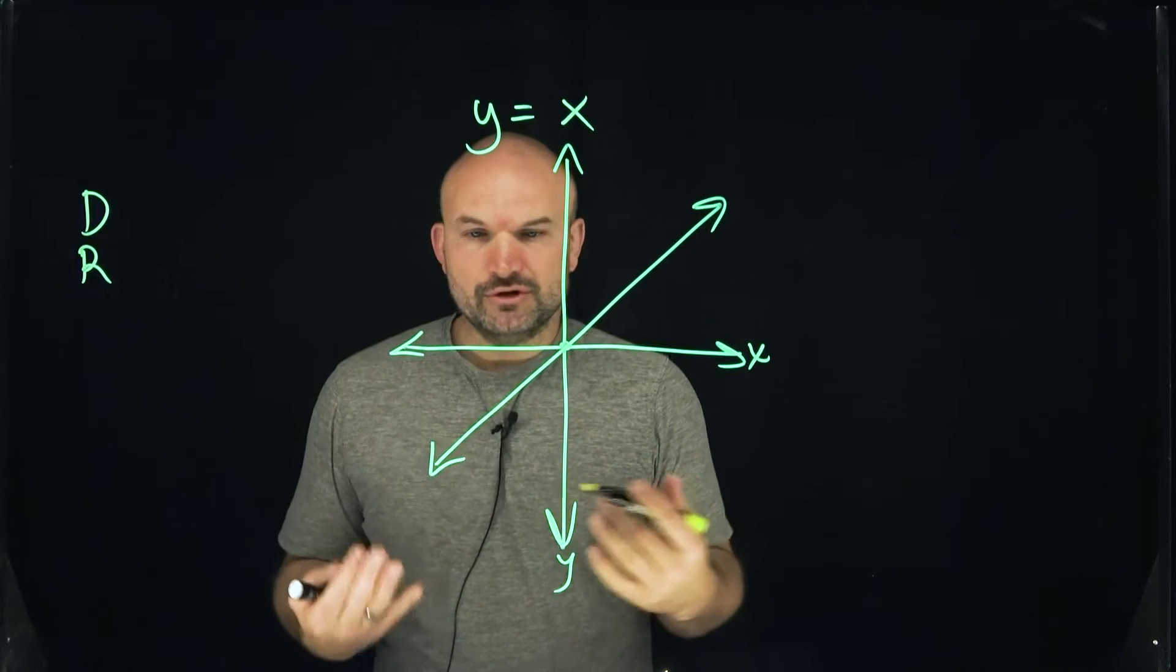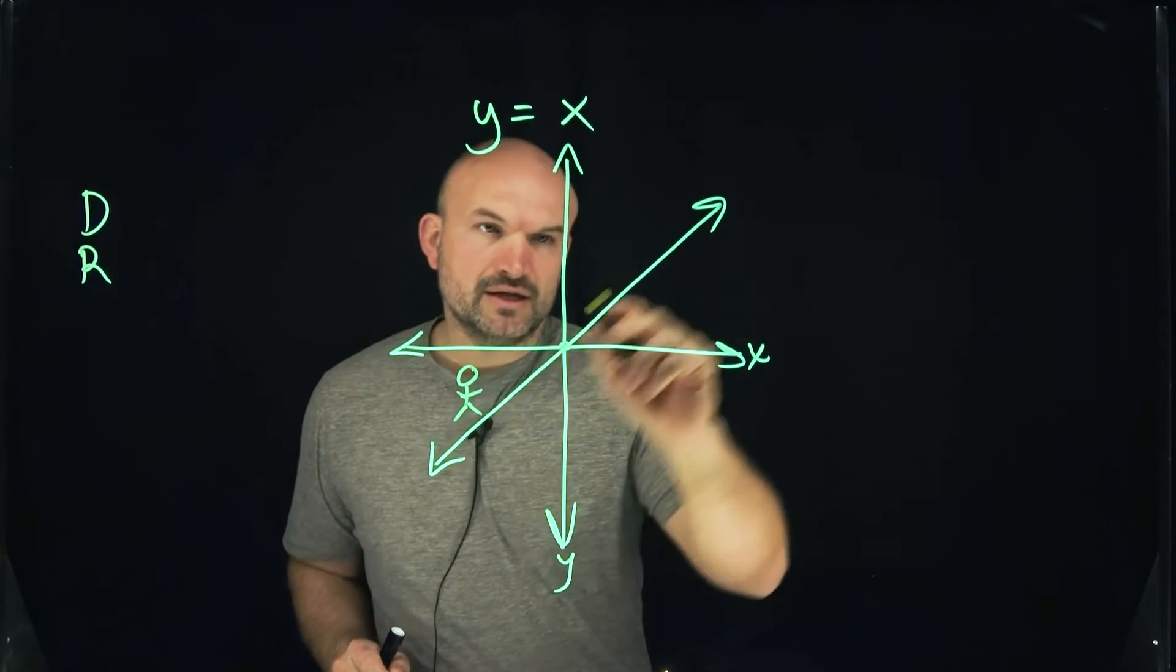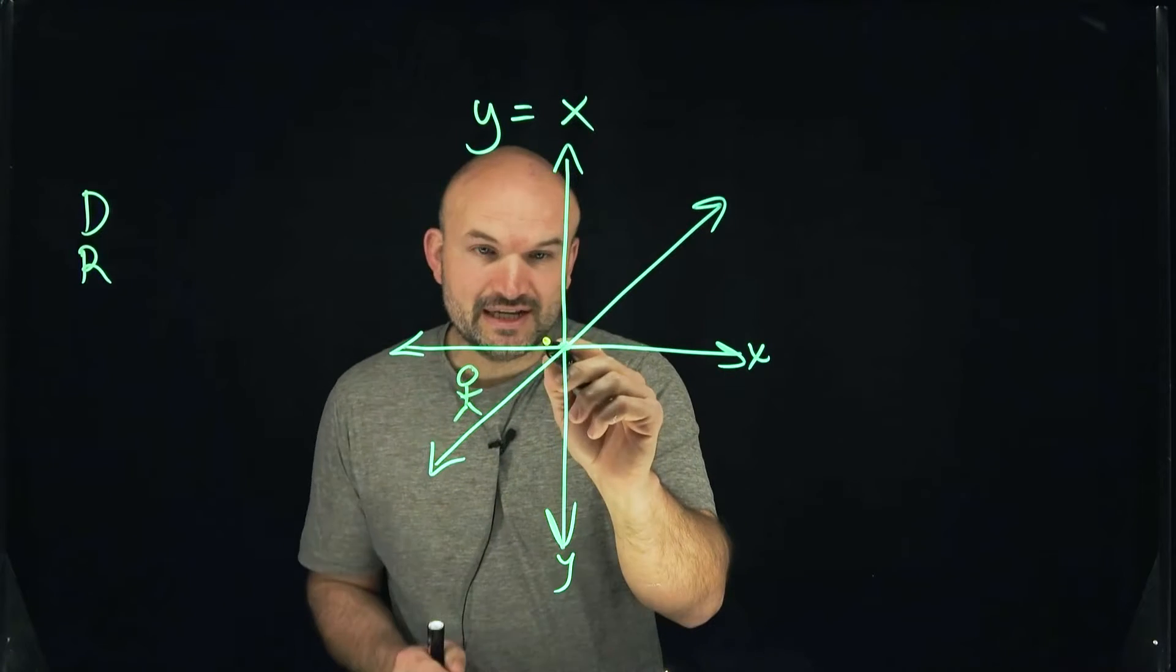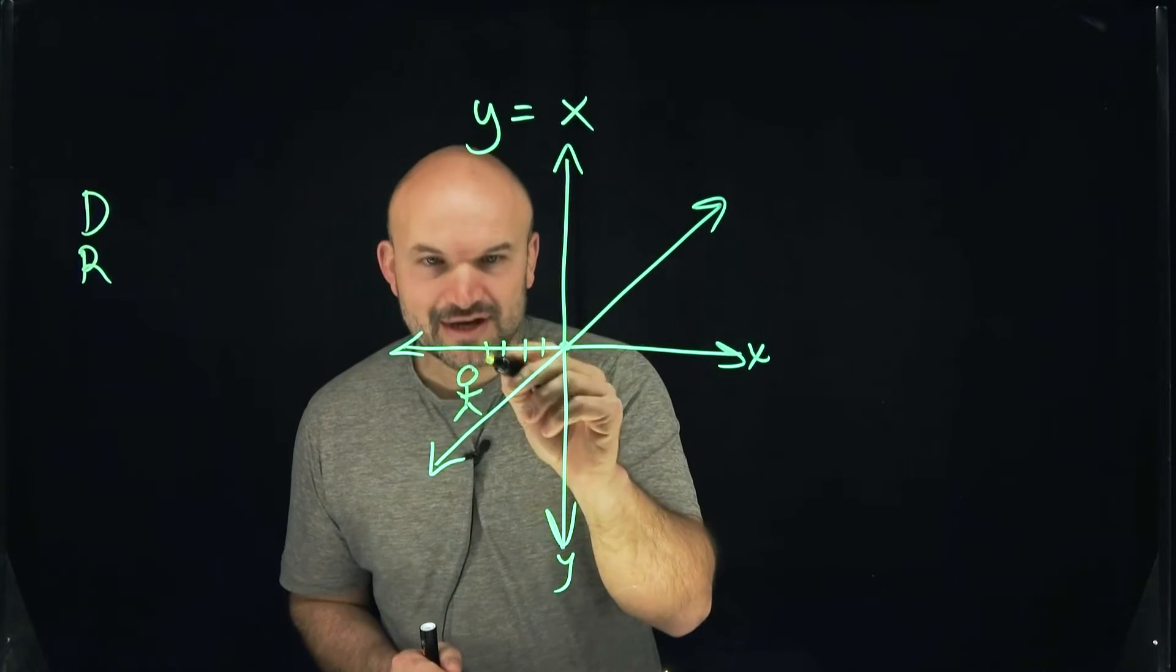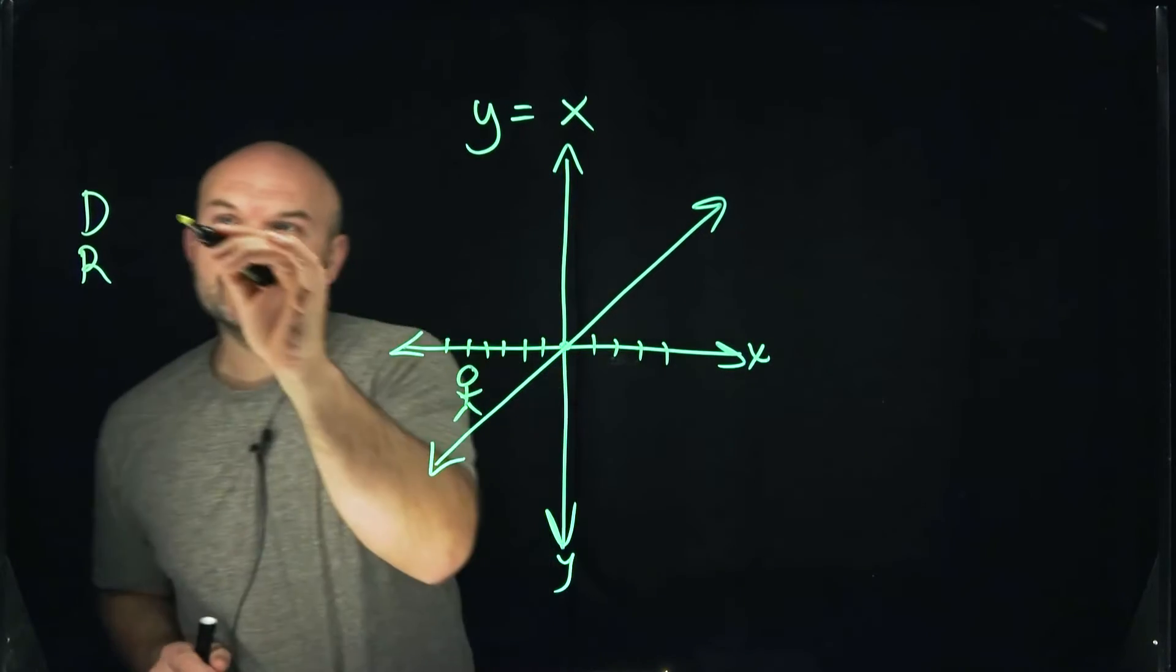There's no holes, there's no breaks. If you were like a little person walking along this graph, you would cross each and every x value. Therefore, the domain is what we call all real numbers.